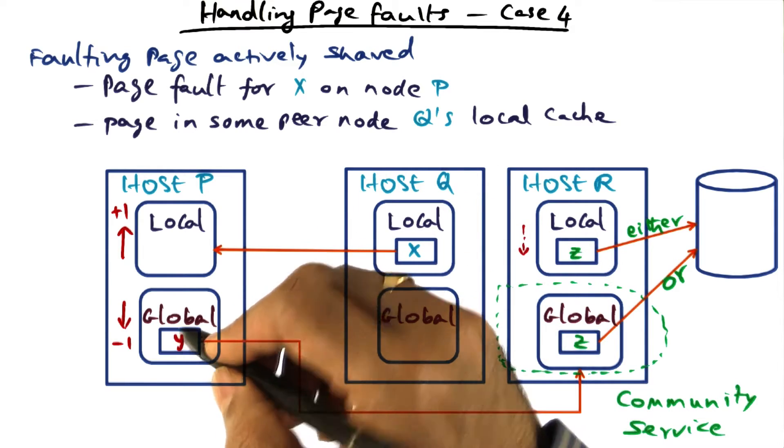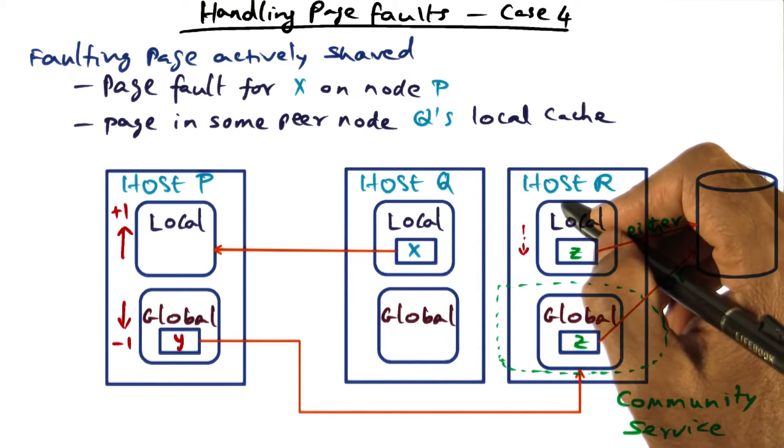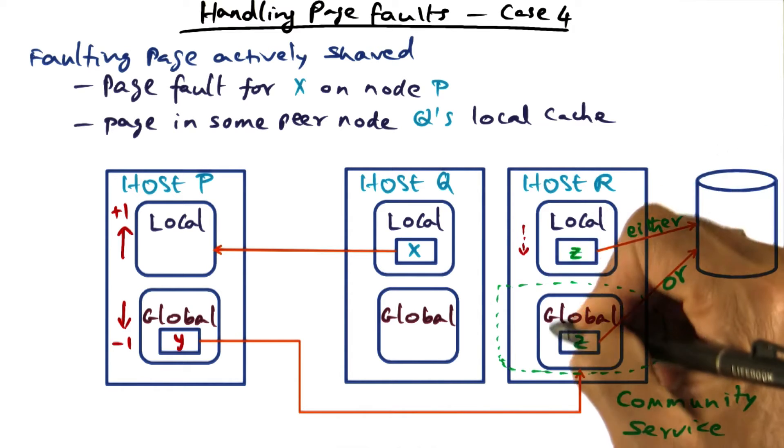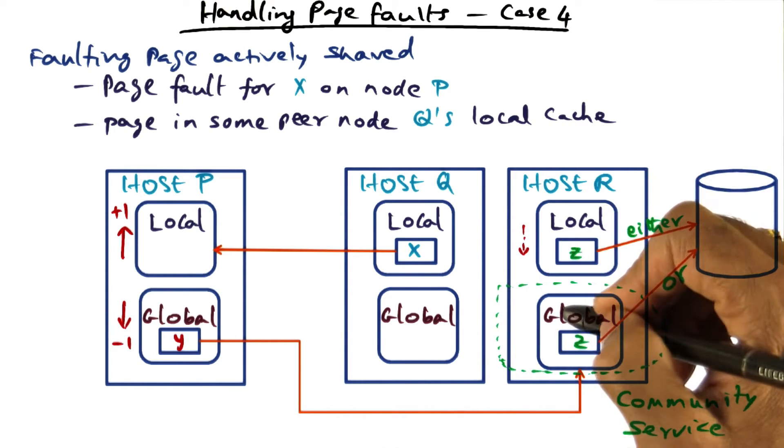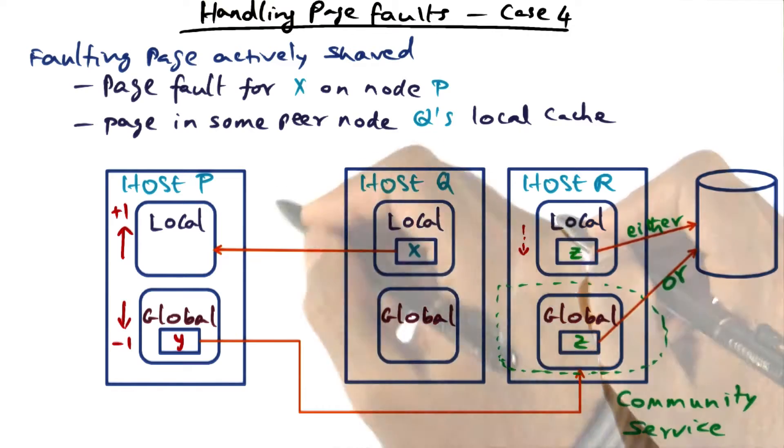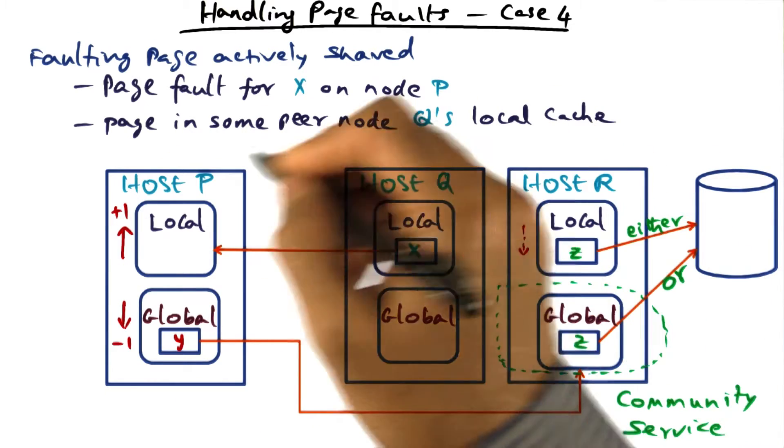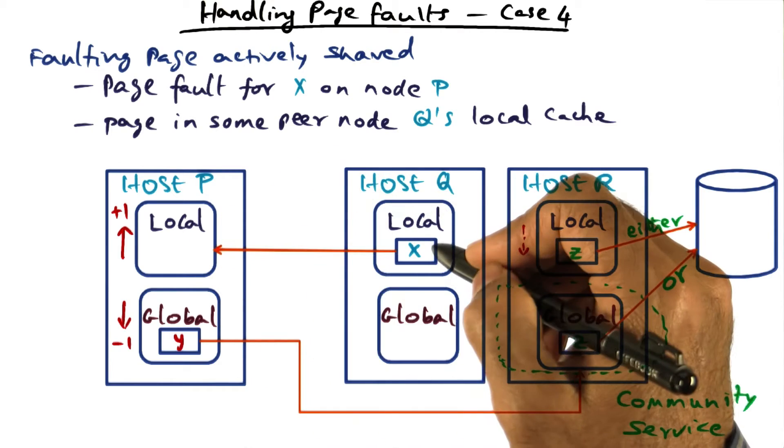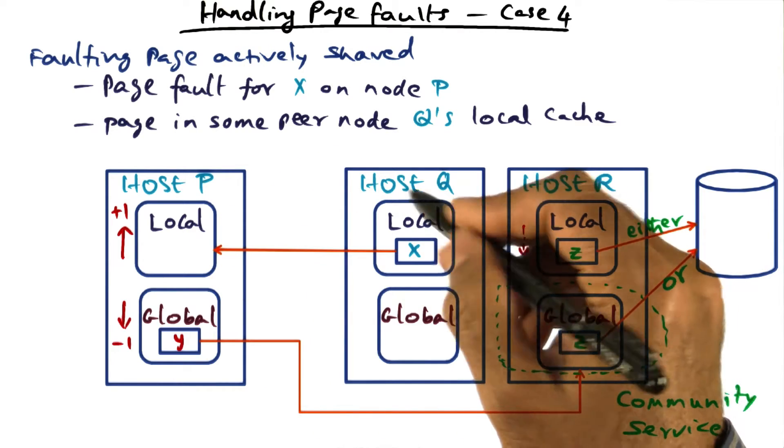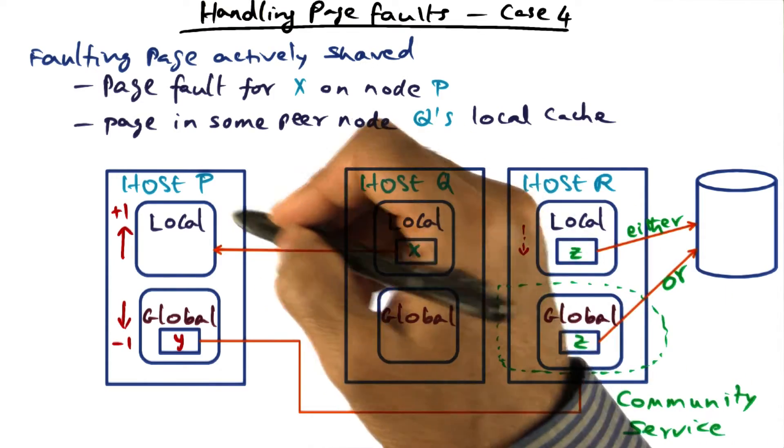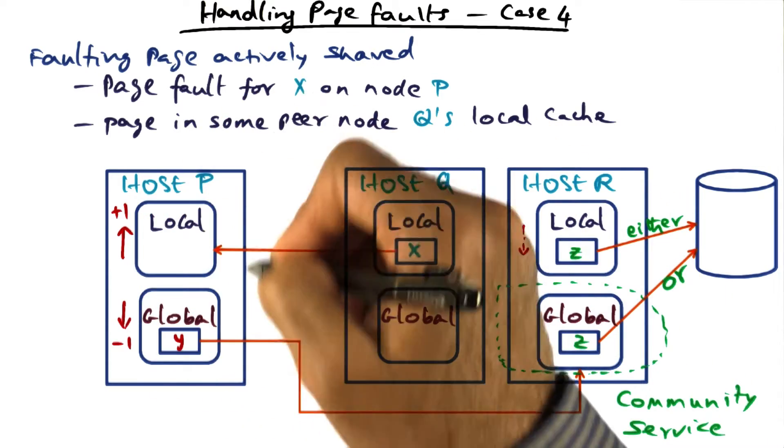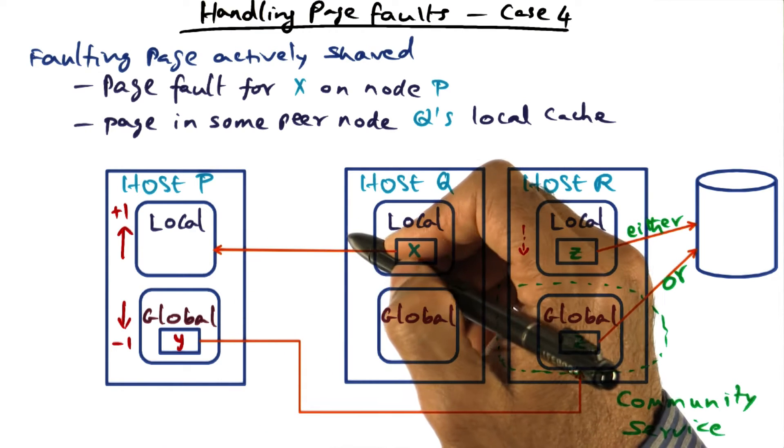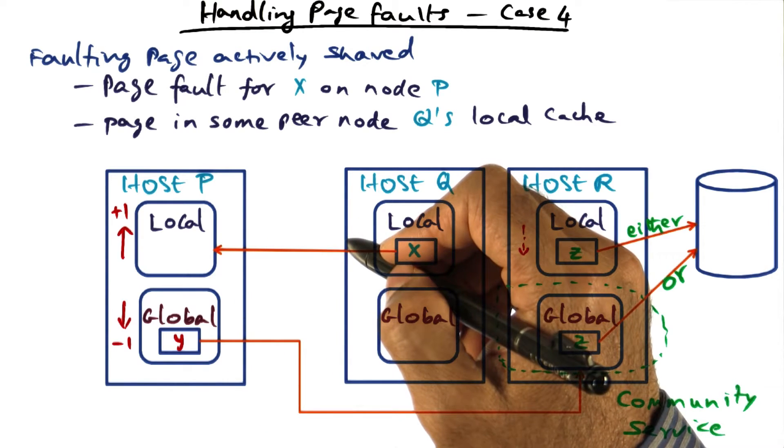So who are we going to send it to? Well, we're going to send it to the host R that happens to have the globally oldest page. Remember that in this situation, the total memory pressure of the entire cluster is going up by one, not just this guy. Because X is going to be still present in the working set of host Q and X is also going to be present in the working set of host P, which means the total memory pressure in the entire cluster is going up by one.